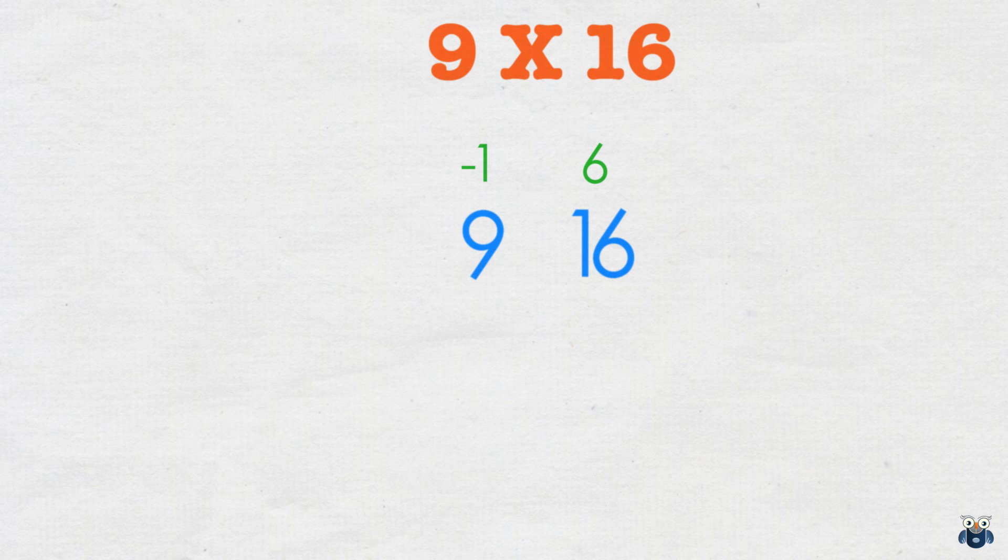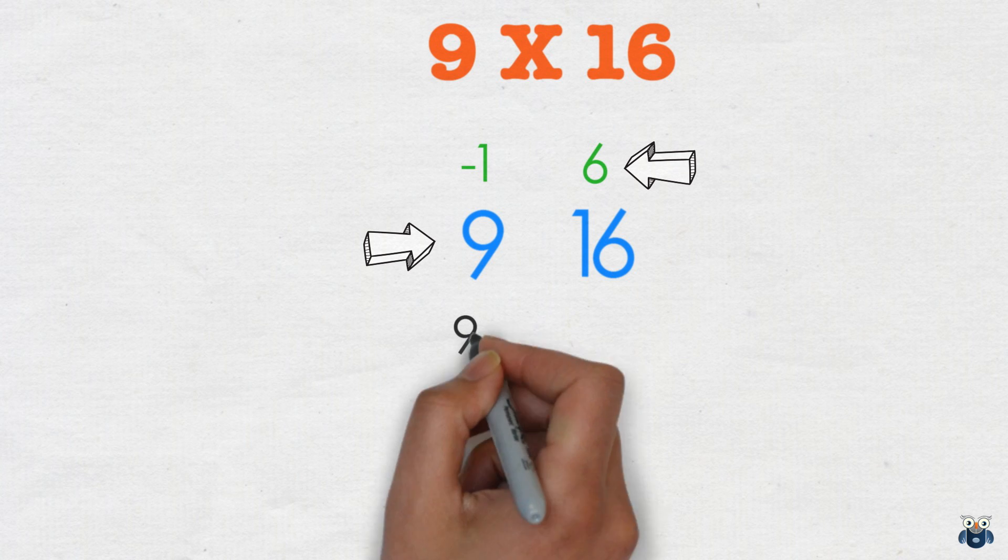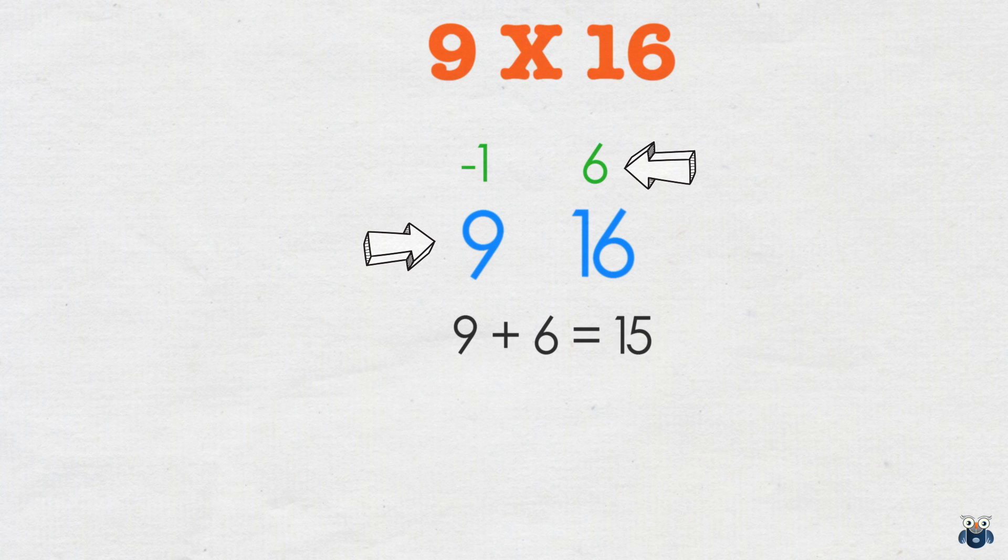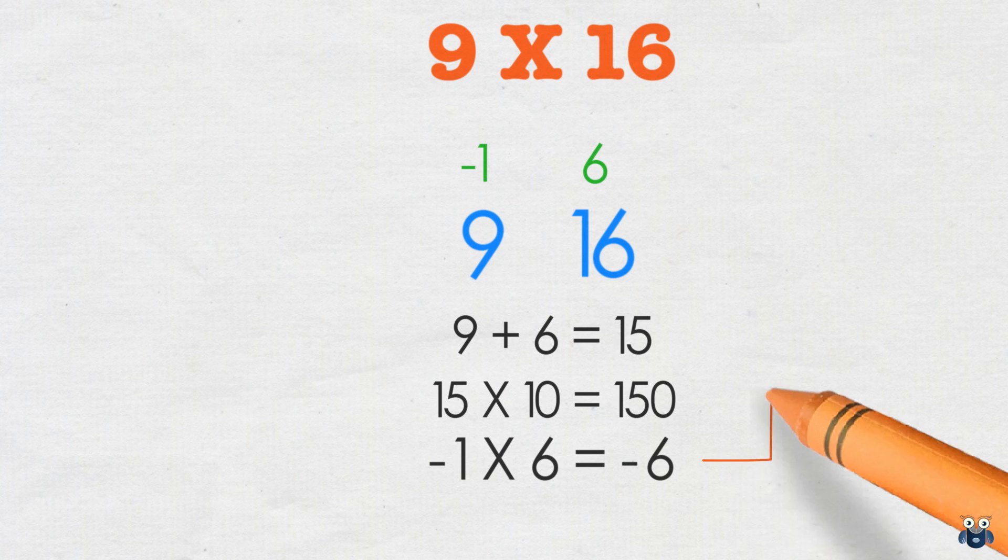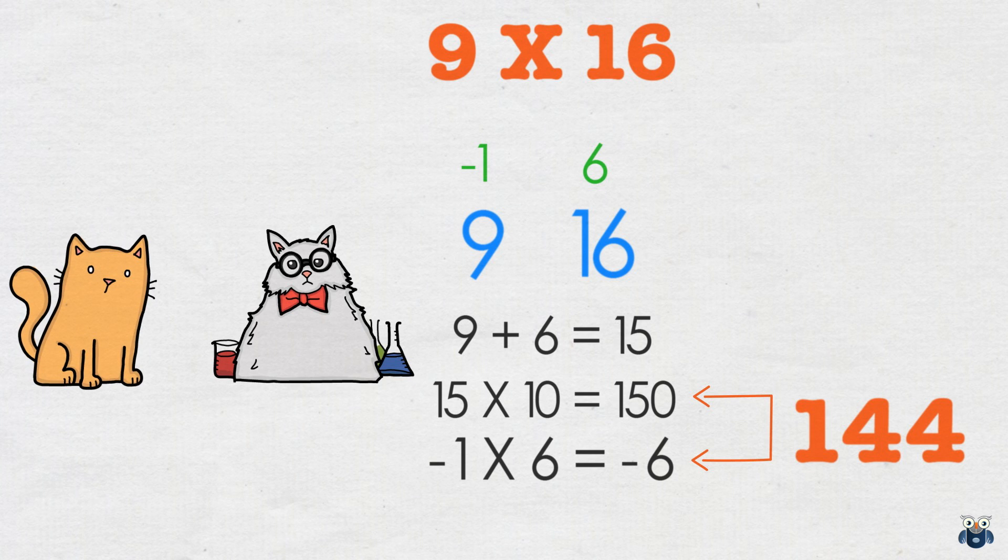Let's write this down. We then add the first number and the second deficit. So 9 plus 6 is 15. And multiplying this result with 10, our base, we get 150. We then multiply the two deficits. Minus 1 times 6 is minus 6. Finally, we add 150 and minus 6, which gives us 144, which is the correct answer.